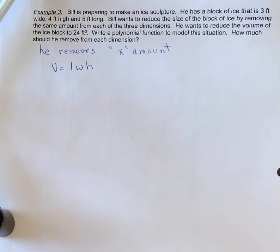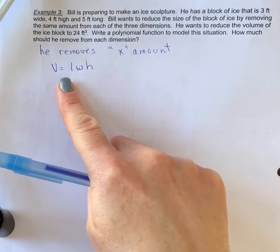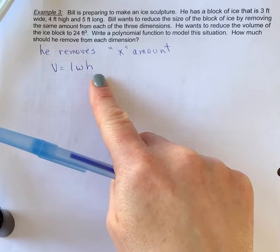So that's in the end, it's going to be 24. Write a polynomial function to model the situation and how much should he remove from each dimension. Since we don't know how much he's removing, that's going to be our x amount. We know we're going to need our volume formula of length times width times height.